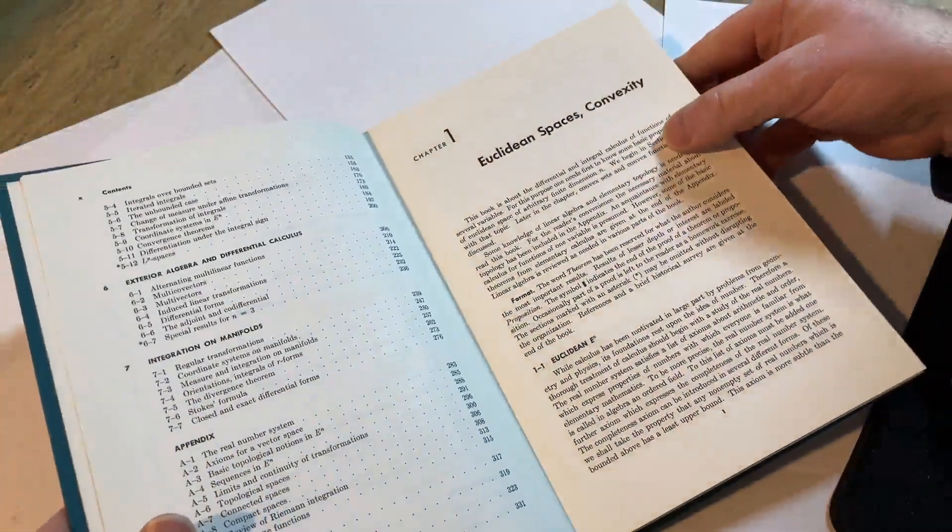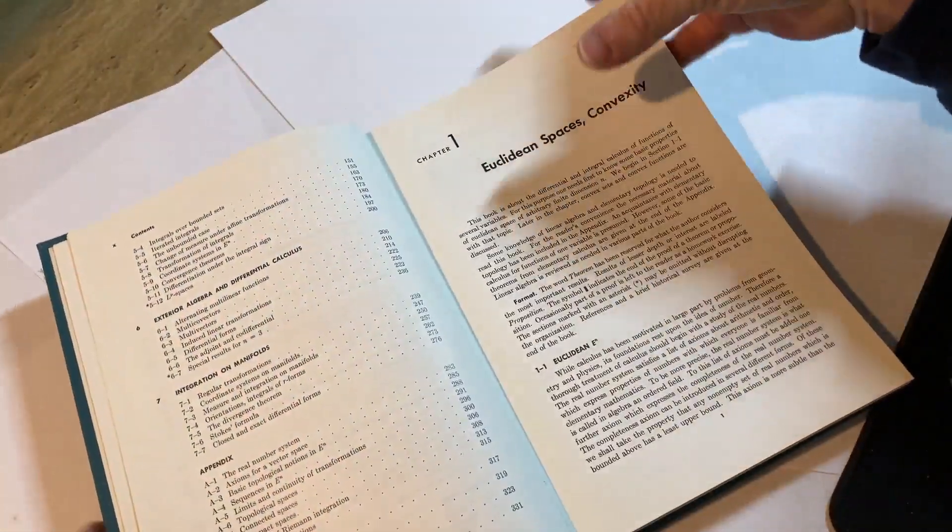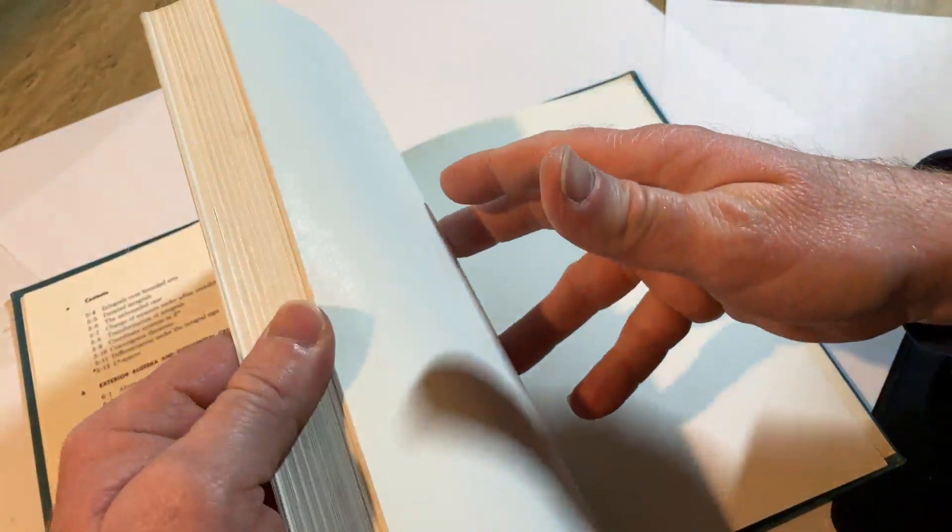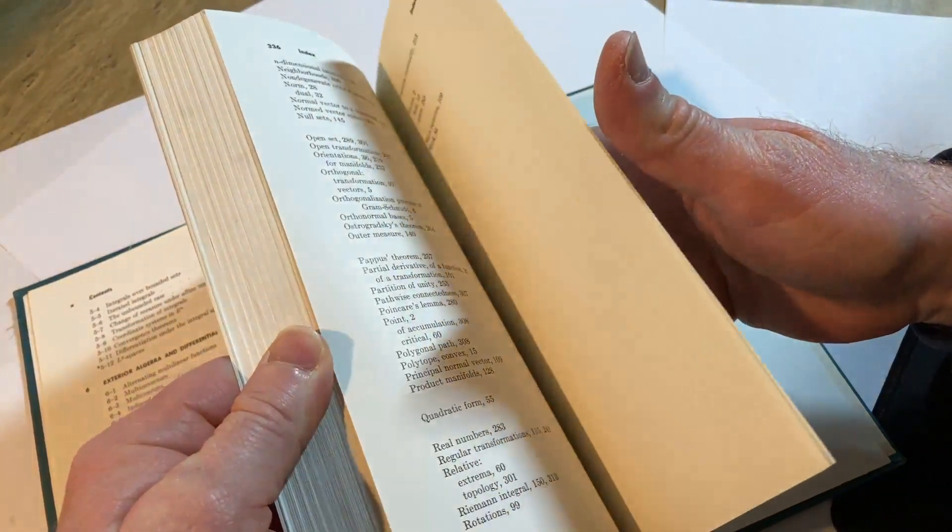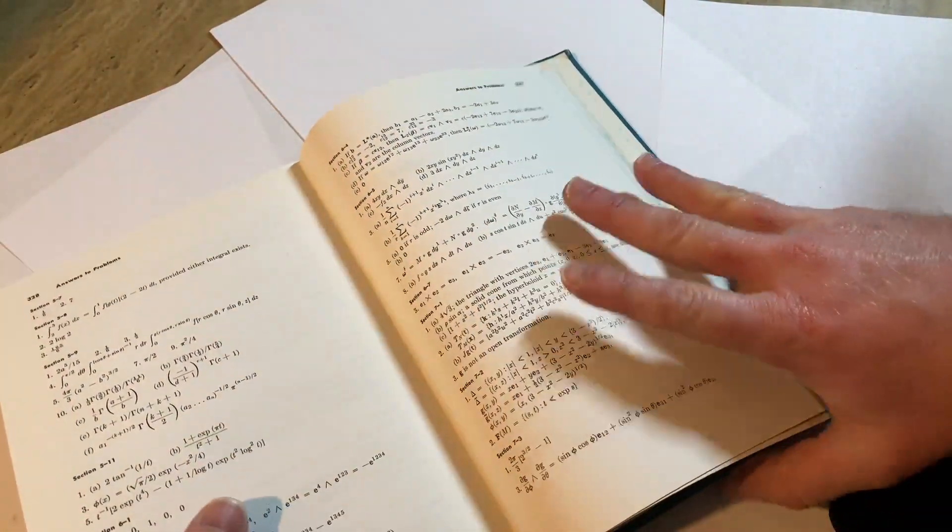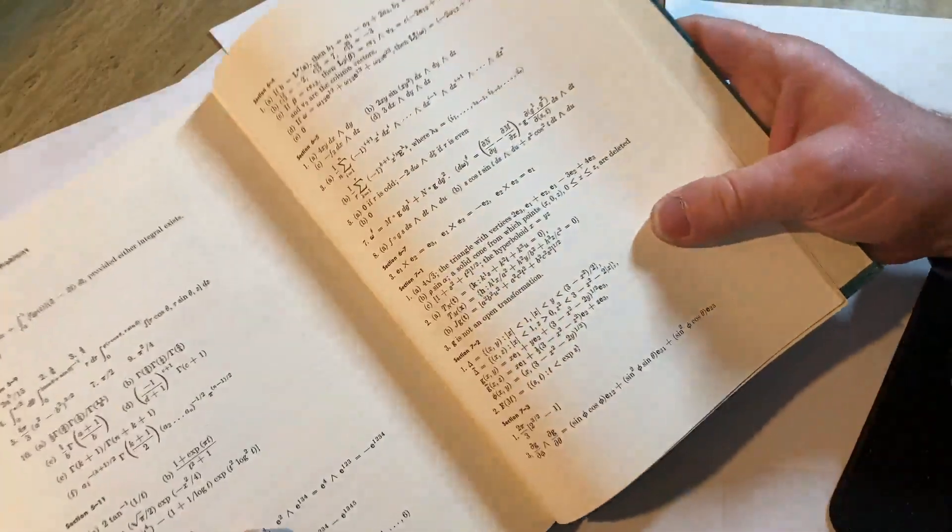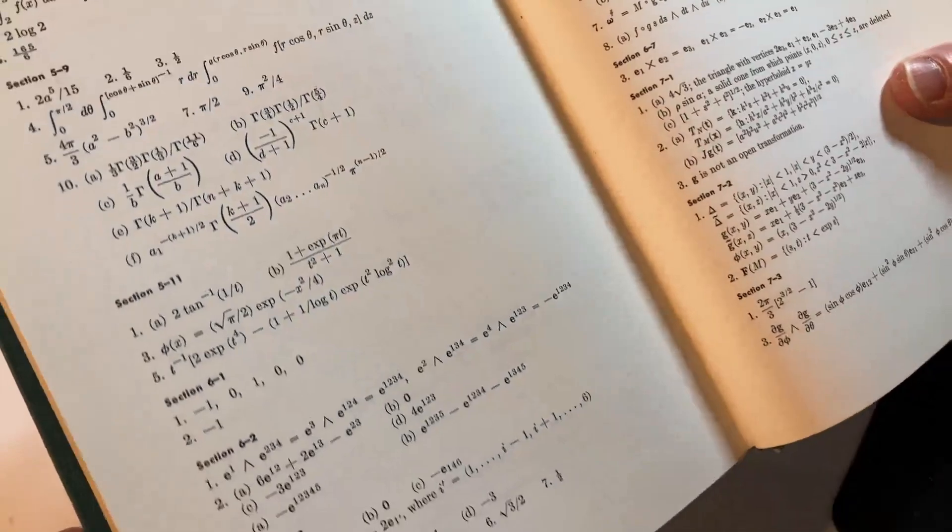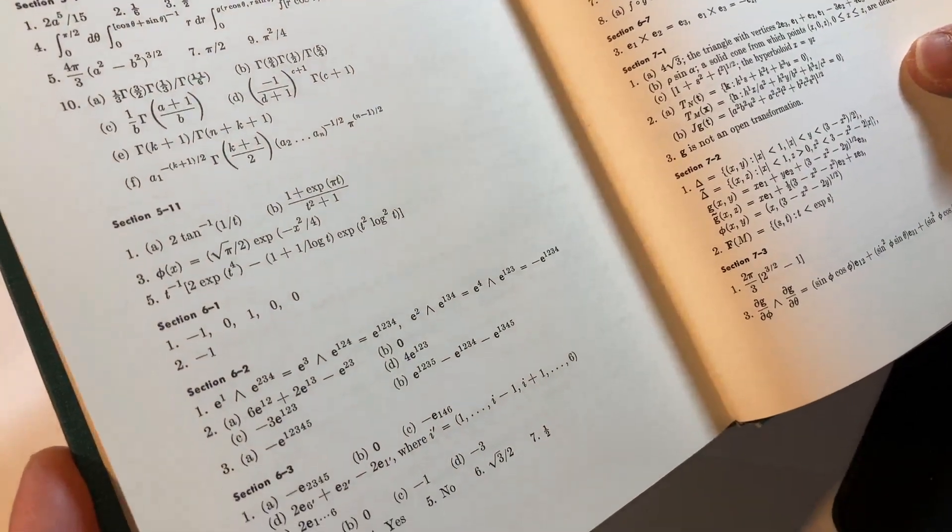Let's jump to the answers right away so you can see what he means by answers. It's very minimal. It reminds me kind of like the Fitzpatrick book or the Rudin book in terms of how many answers you get. You just don't get that much, right?